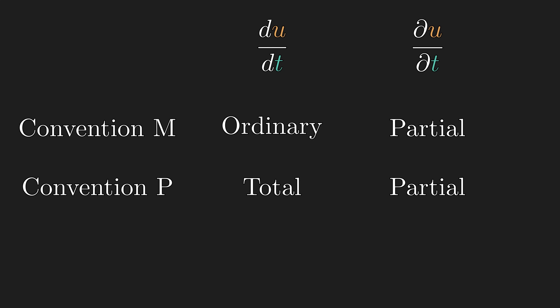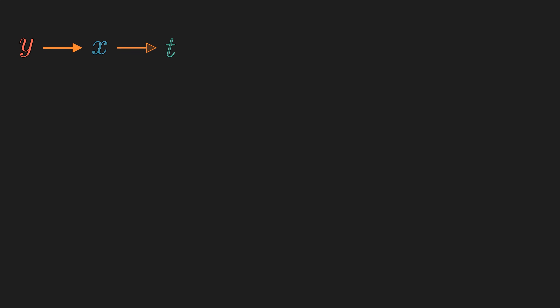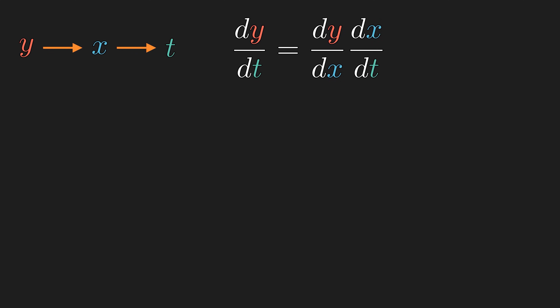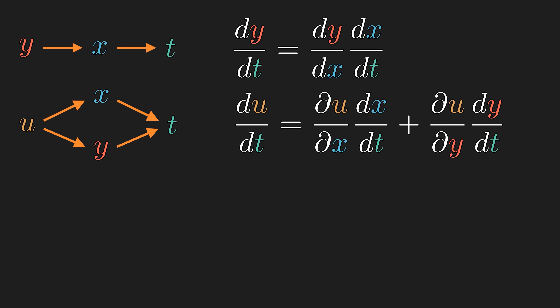Once we have a more complicated dependence that would involve chain rule, the choice of convention becomes important. Let's begin with convention M, which is taught in a calculus curriculum. If Y depends on X, which depends on T, we're interested in the rate at which Y changes with respect to T, calculated using the chain rule. If U is a function of X and Y, and both X and Y depend on T, we use the multivariable chain rule. Notice how we use the partial derivative whenever there are multiple dependencies, but the ordinary derivative whenever there is a single variable dependence.